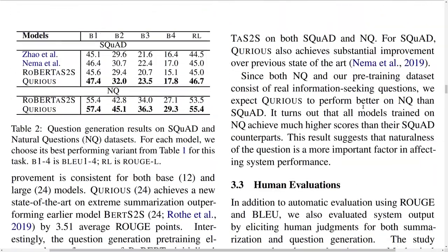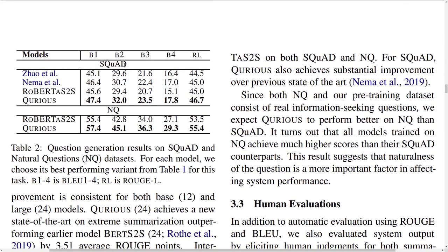For the second task of question generation, they test on the SQuAD dataset and the NQ (Natural Questions) dataset. The Curious approach performs best compared to various baselines such as RoBERTa fine-tuned on SQuAD, previous approaches, and also on the NQ dataset. Pre-training on this question generation objective is a pretty good approach to get improved performance on text generation tasks.